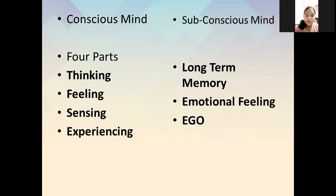The conscious mind is further divided into four parts: thinking, feeling, sensing, and experiencing. These are natural parts of our conscious mind — as we are thinking, feeling, or experiencing something in the present.